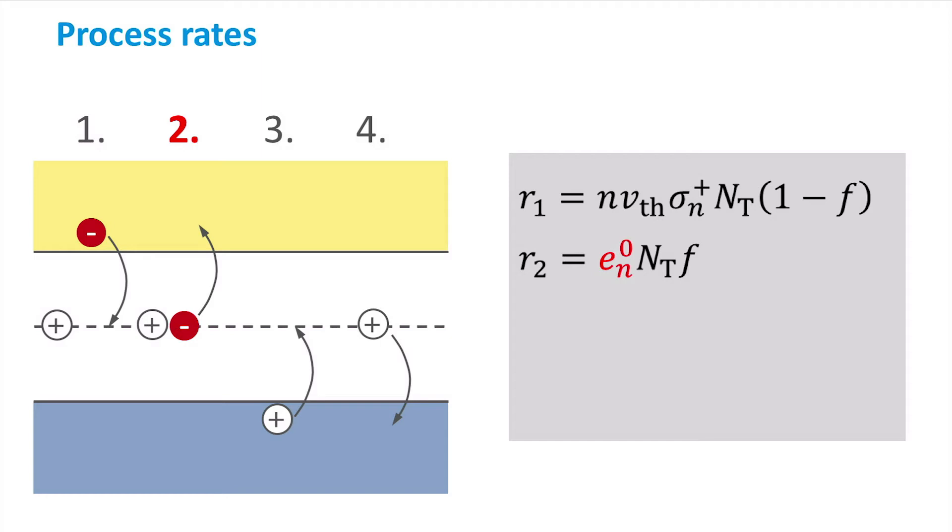The third process is similar to the first process, but now the capture carrier is a hole. The difference is that the hole concentration P is used instead of the electron concentration N,